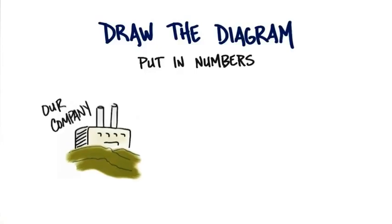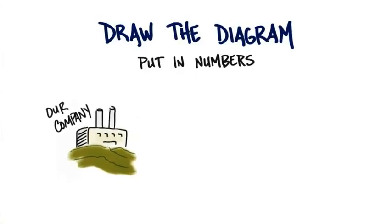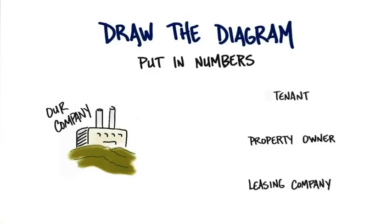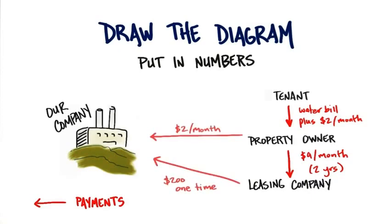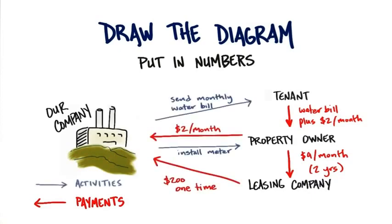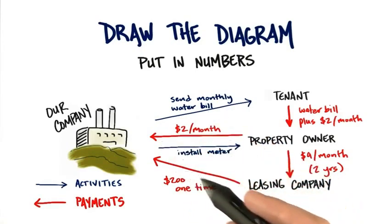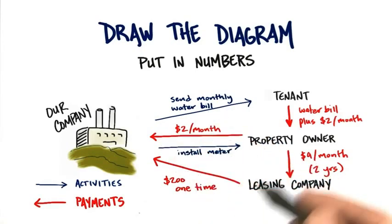So let's assume this is your company over here. What you've discovered is that there are three different customer segments — tenants, property owners, and leasing companies. I want to know: is this a subscription? What is the revenue stream between each one of these customer segments, and what are the pricing tactics? And then how do you make money, and what do you provide? And all of a sudden you can now see both the revenue stream and the pricing going back and forth.